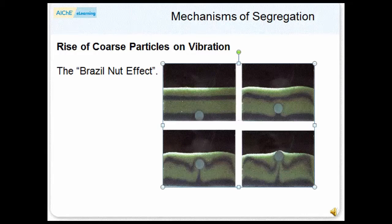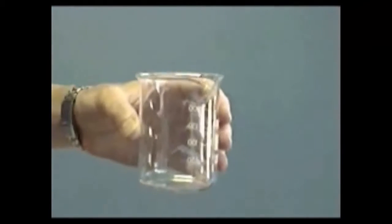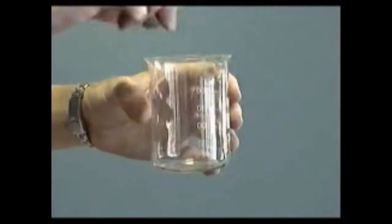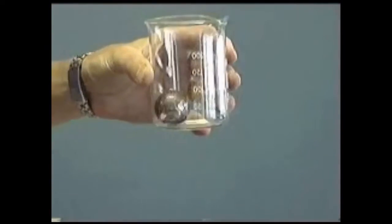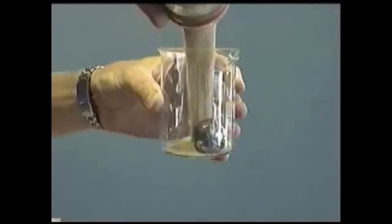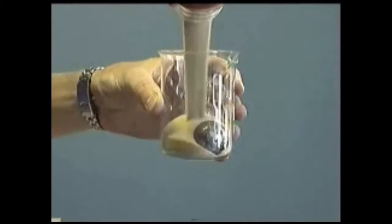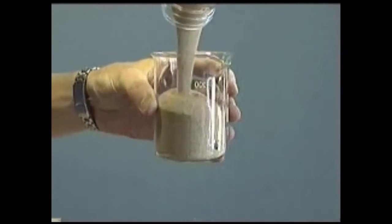Rise of coarse particles and vibration. If a mixture of particles of different sizes is vibrated, the larger particles move upwards. This can be demonstrated by placing a single large ball at the bottom of a bed of sand — for example, a 20 millimeter steel ball or similar-sized pebble in a beaker of sand from the beach.